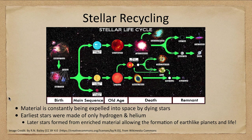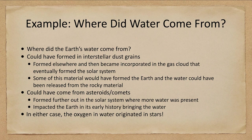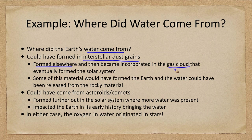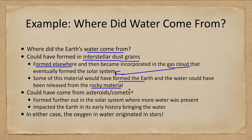As an aside, let's consider where Earth's water came from. Did it come from interstellar dust grains? Water did form elsewhere and became incorporated into the gas cloud that eventually formed the solar system. Some of this material would have formed the Earth, and the water could have been released from rocky material that had water embedded in it.